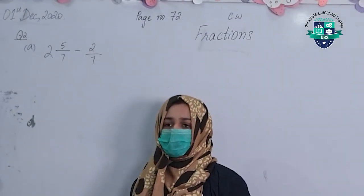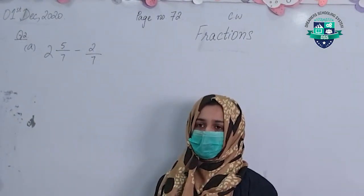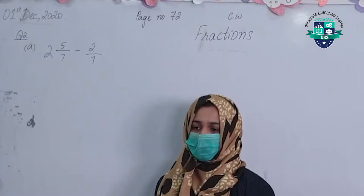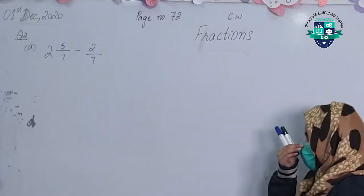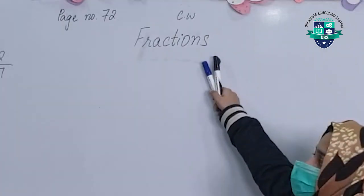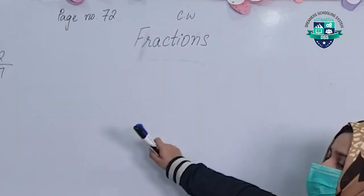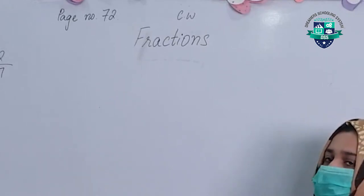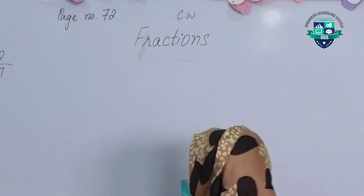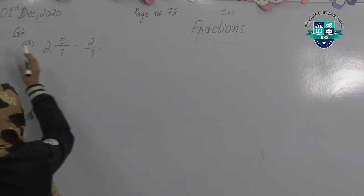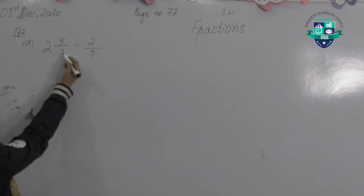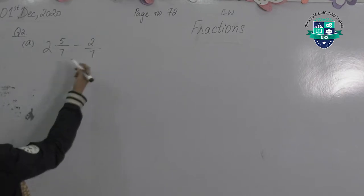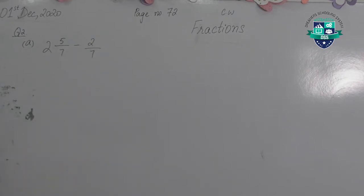Assalamualaikum class, today is your first online maths class. We are continuing with our topic fractions. I'll review the questions with you and you have to solve the next question by yourself. Page number 72, question 2 part A: 2 whole 5 by 7 minus 2 by 7. We have already done the addition questions, now these are the subtraction ones.